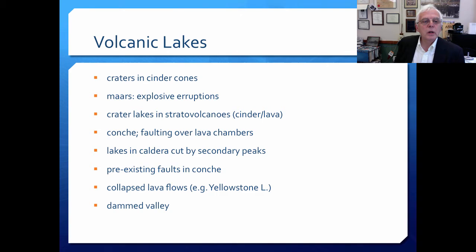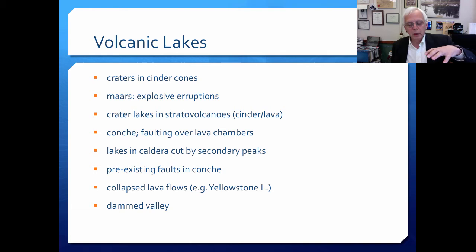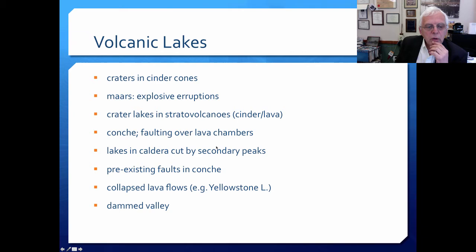Volcanic lakes are formed in a variety of ways: craters and cinder cones, maars from explosive eruptions, crater lakes in stratovolcanoes, and conche — the faulting over a lava chamber. Conche means 'shell,' referring to a shell of cool lava on the outside; lava disappears and the chamber collapses, creating a basin where lakes can form. Collapsed lava flows can also dam valleys. Lots of different ways volcanoes cause water accumulation on the Earth's surface.